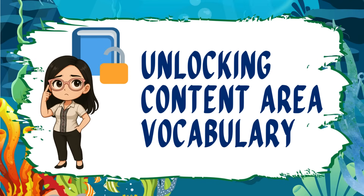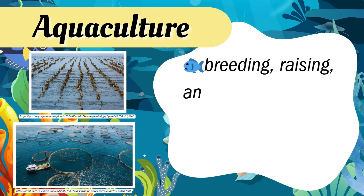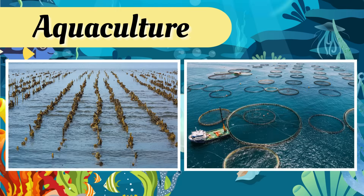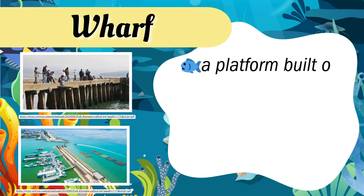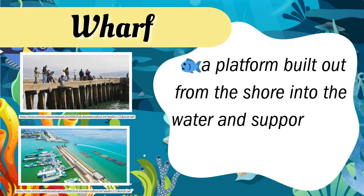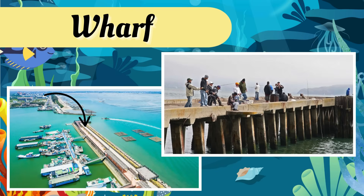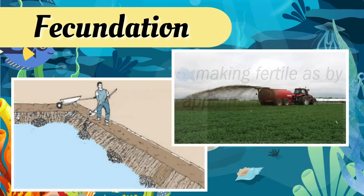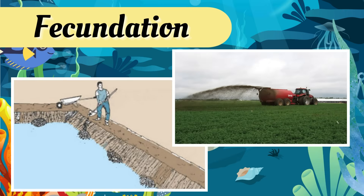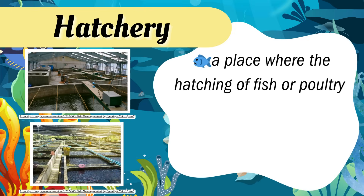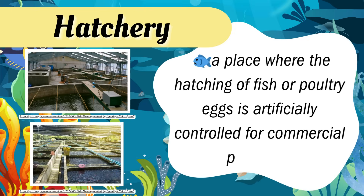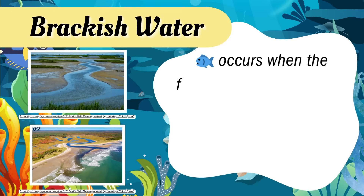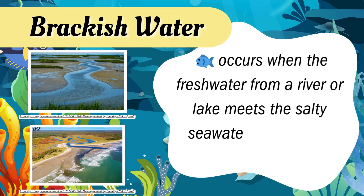Unlocking Content Area Vocabulary. Aquaculture refers to breeding, raising, and harvesting fish, shellfish, and aquatic plants. Wharf is a platform built out from the shore into the water and supported by piles. Fecundation is making fertile as by applying fertilizer or manure. Hatchery is a place where the hatching of fish or poultry eggs is artificially controlled for commercial purposes. Brackish water occurs when the fresh water from a river or lake meets the salty seawater of an ocean body.